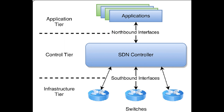A traditional network architecture requires individual network devices like a switch to make traffic decisions based on their own configured routing tables. But SDN allows admins to get around that static limitation of physical architecture associated with traditional networking.